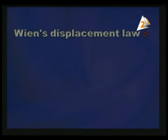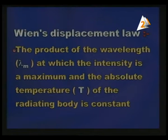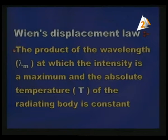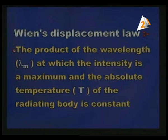Wien's displacement law states that the product of lambda maximum — the wavelength at which the intensity of radiation is a maximum — and the absolute temperature of the radiating body is a constant. So there is an inverse relation between lambda maximum and the absolute temperature. As the absolute temperature increases, the wavelength which corresponds to the maximum radiation decreases. That's why the color shifts from red to orange-yellow, and eventually to white, as we increase the temperature.